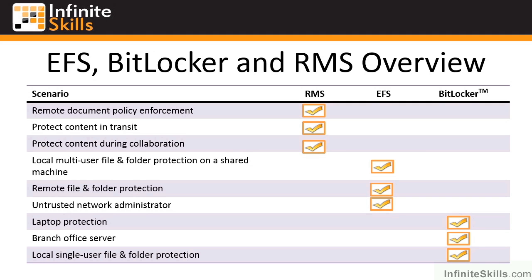Then we have BitLocker. BitLocker is volume-level encryption that protects everything on a particular volume. As soon as the machine is turned on, you use your BitLocker key — a PIN or a USB drive — and you can access all the data on that machine. But if you lose that machine or it's stolen, no one can get access to that data. That's volume-level encryption.